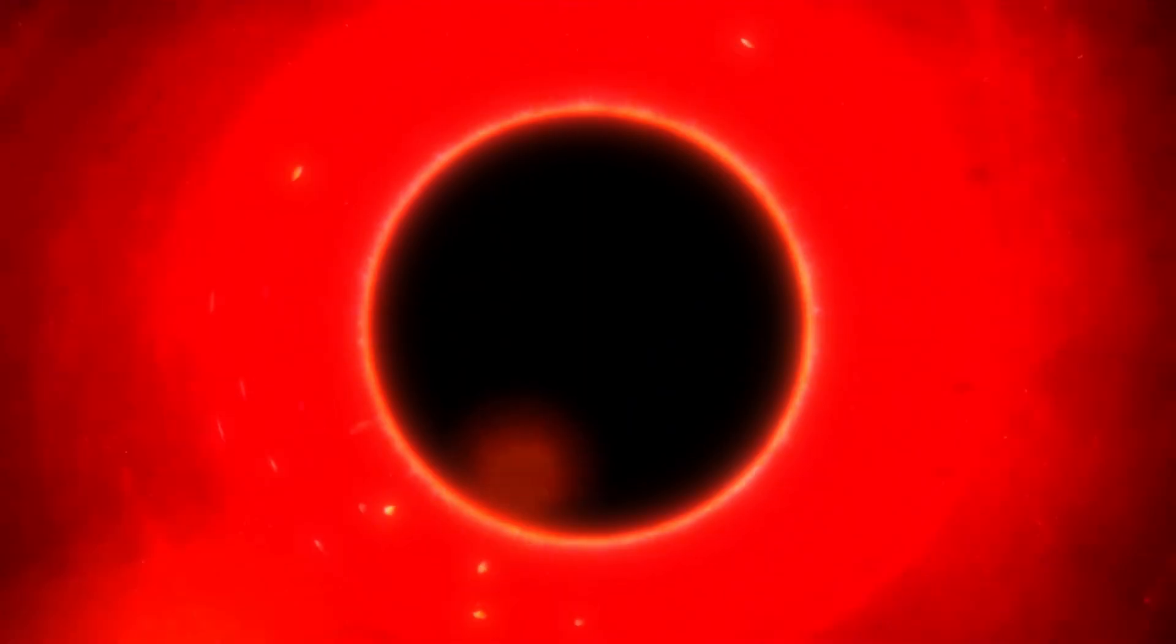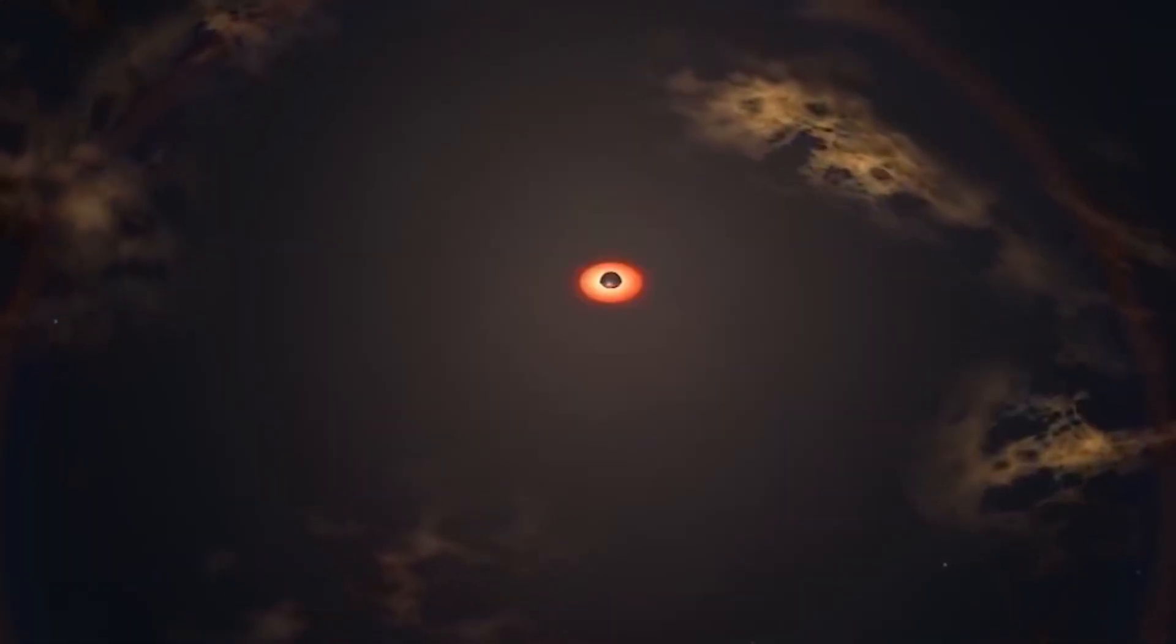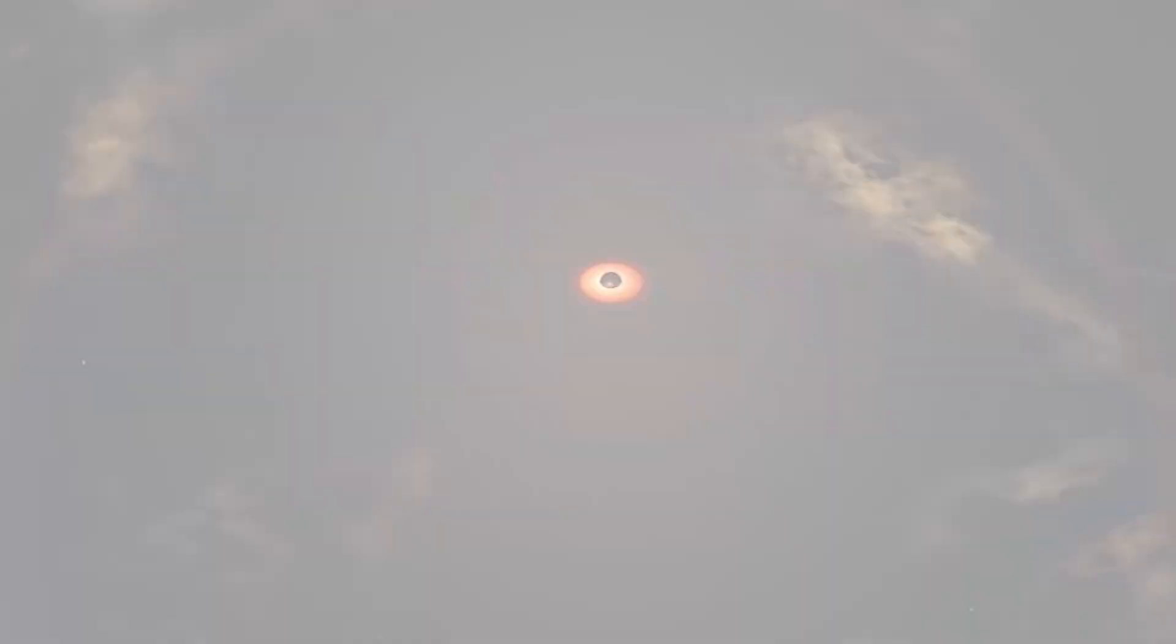As it shrinks, its temperature skyrockets and it releases an enormous burst of radiation. A final cosmic explosion that may outshine everything around it for an instant. And then... silence. The event horizon disappears. The singularity evaporates. The black hole, once one of the most powerful things in existence, is gone. All that remains is energy. And maybe, just maybe, information encoded in the faint radiation it left behind.